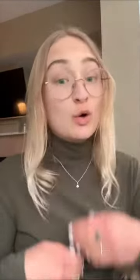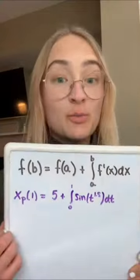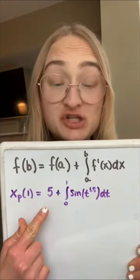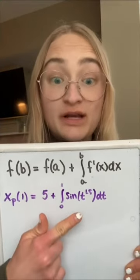Pause to read part A. We're given velocity and we're looking for position, so let's take a back derivative. This sounds like a job for the fundamental theorem of calculus. Particle P starts at 5 and we get the change in position by integrating from 0 to 1 of the velocity.